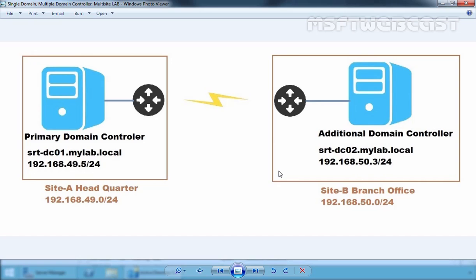A site can be a separate building, separate city or even in a separate country. This video tutorial will provide an example of this by detailing the steps on setup and configuration of Active Directory Sites and Subnets. Two sites, Site A and Site B, will be created then assigned to the relevant server along with the subnets.